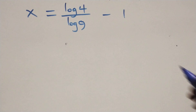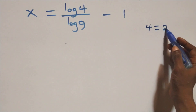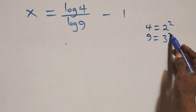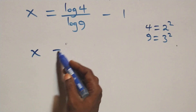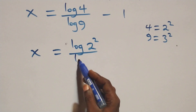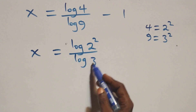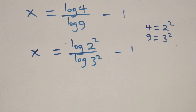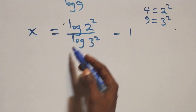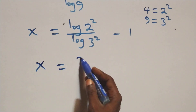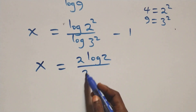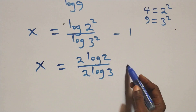We can rewrite 4 as 2 times 2, which is 2 squared, and also 9 as 3 times 3, which is 3 squared. What we have becomes x equals log(2 squared) over log(3 squared) minus 1. Applying the power of logarithm, the 2 comes out front on each, giving x equals 2 log 2 over 2 log 3 minus 1.